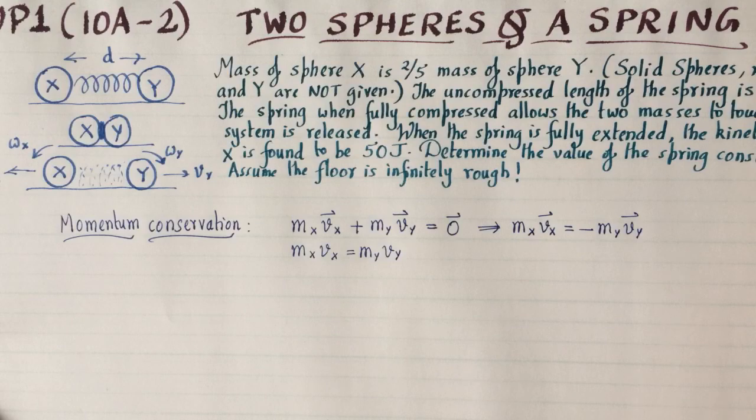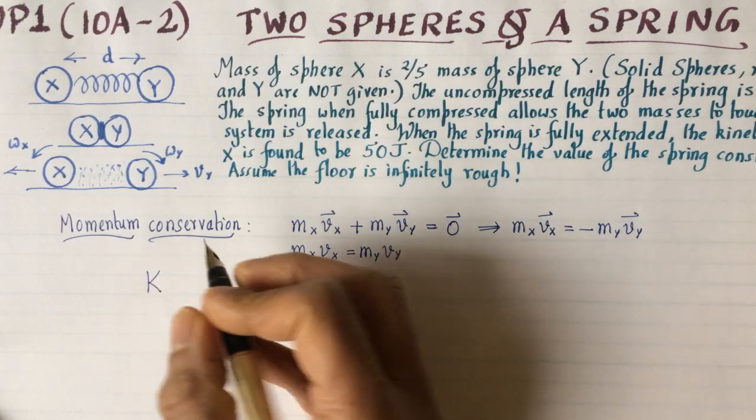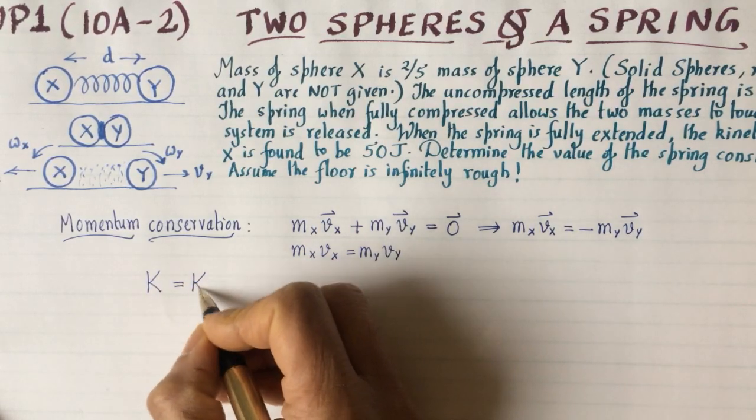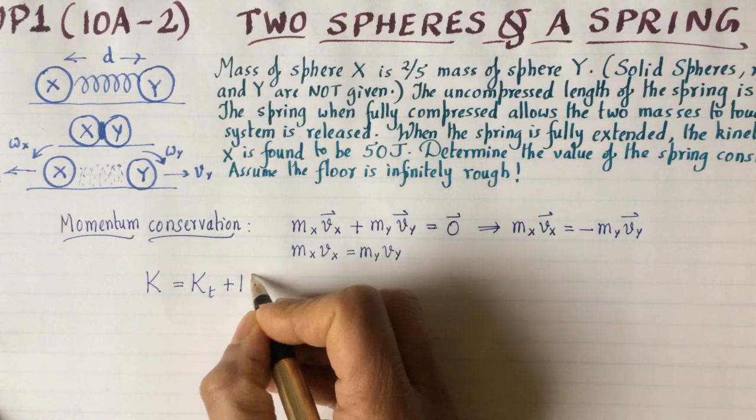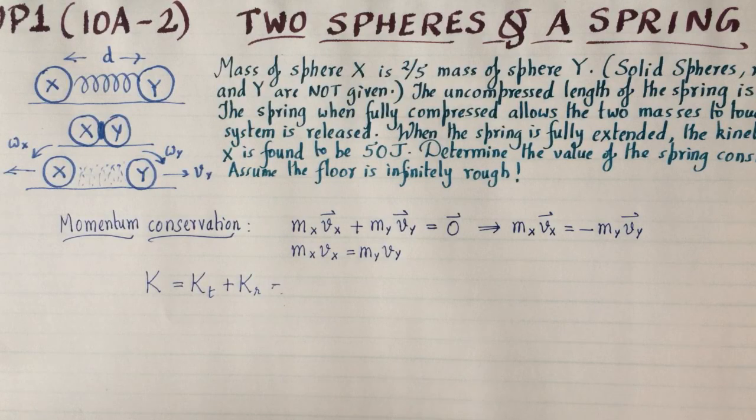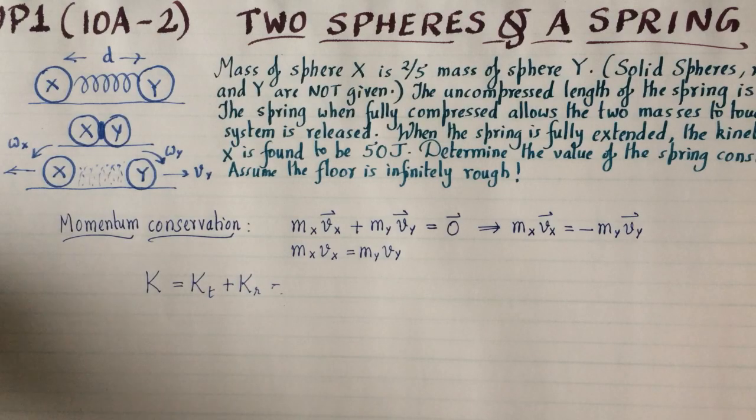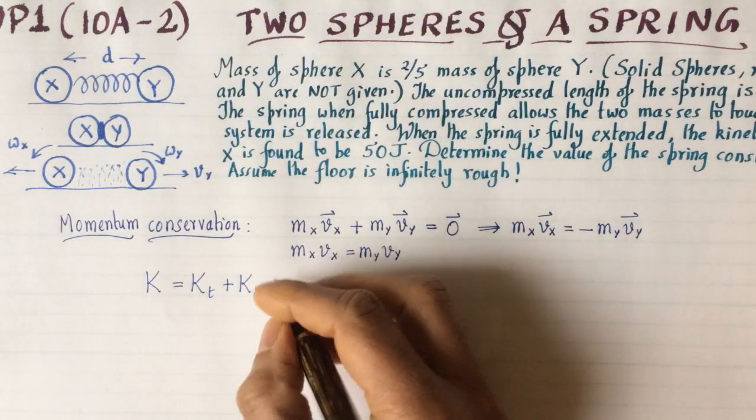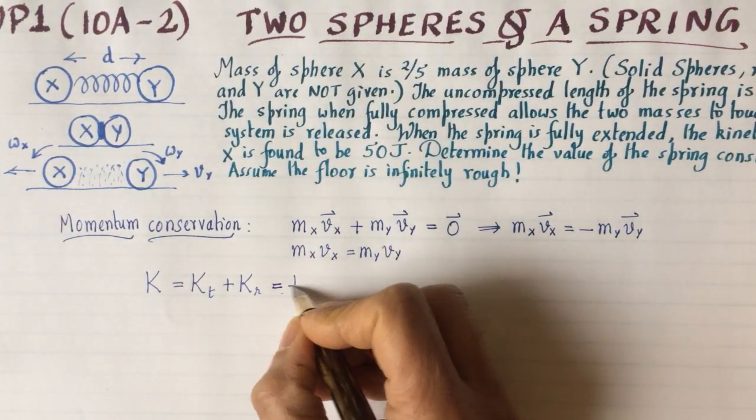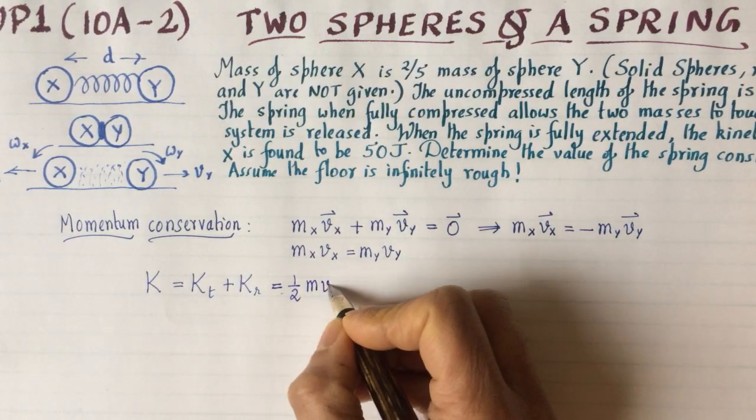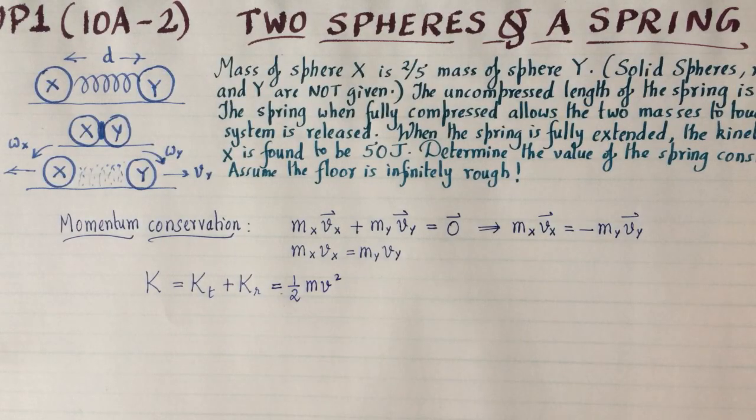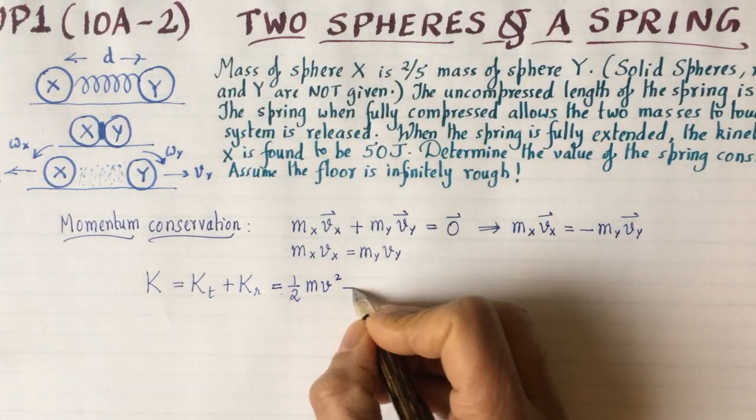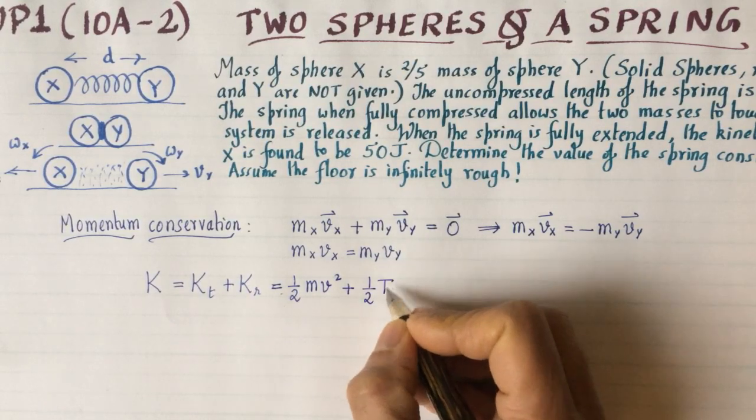We have to decide what amount of kinetic energy goes into each object. The kinetic energy is composed of two parts: translational kinetic energy plus rotational kinetic energy. The translational kinetic energy is (1/2)mv². For the rotational kinetic energy, I have (1/2)Iω². The moment of inertia of a solid sphere is given by a standard result, which is (2/5)mr², where r is the radius of the sphere.